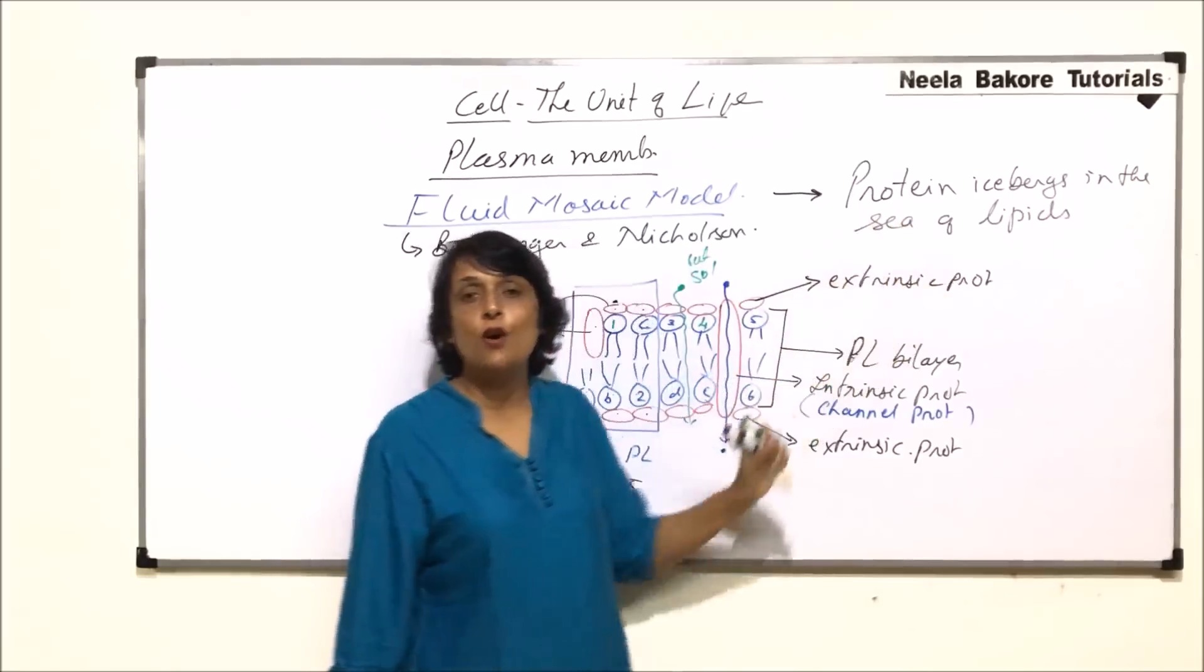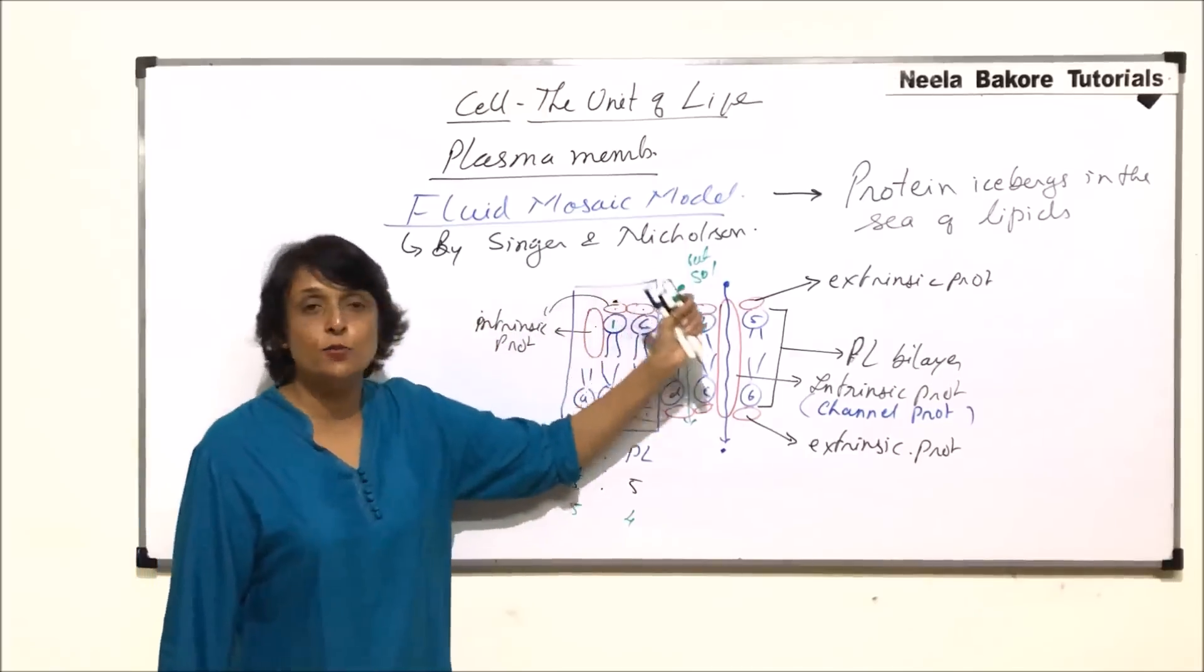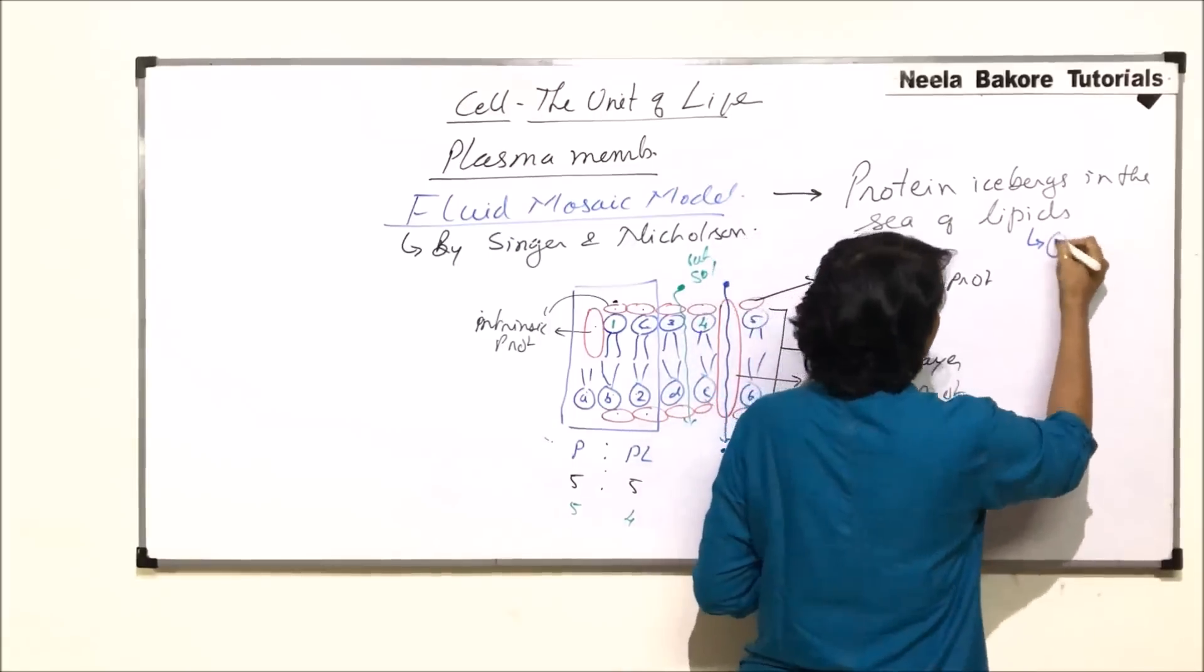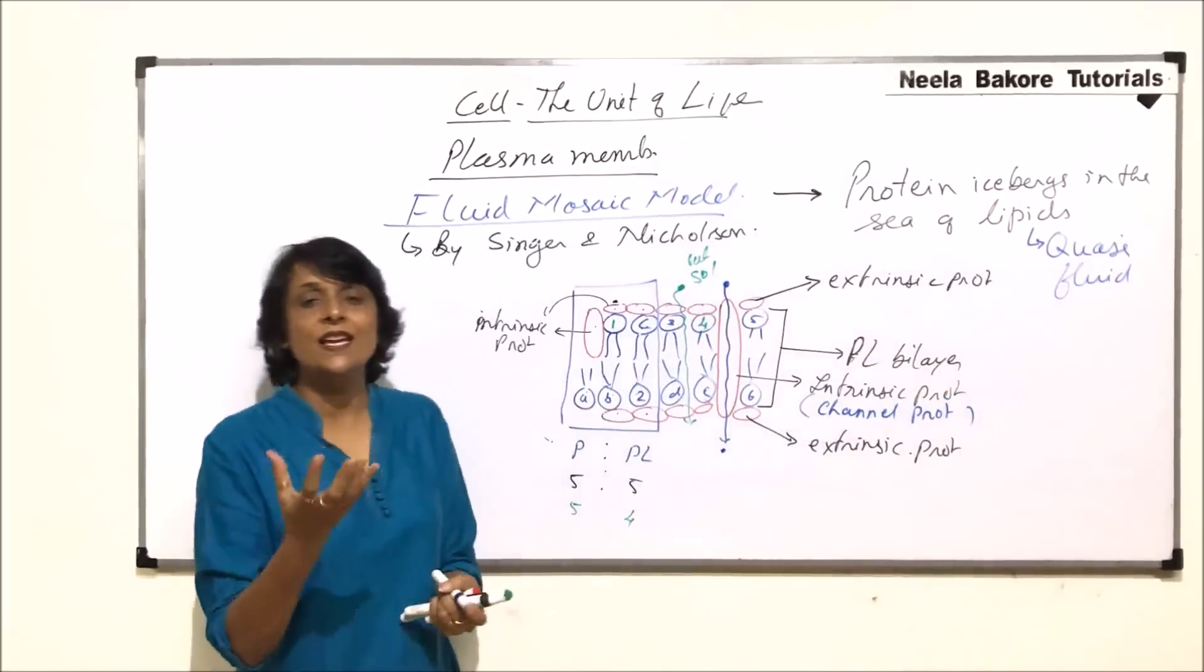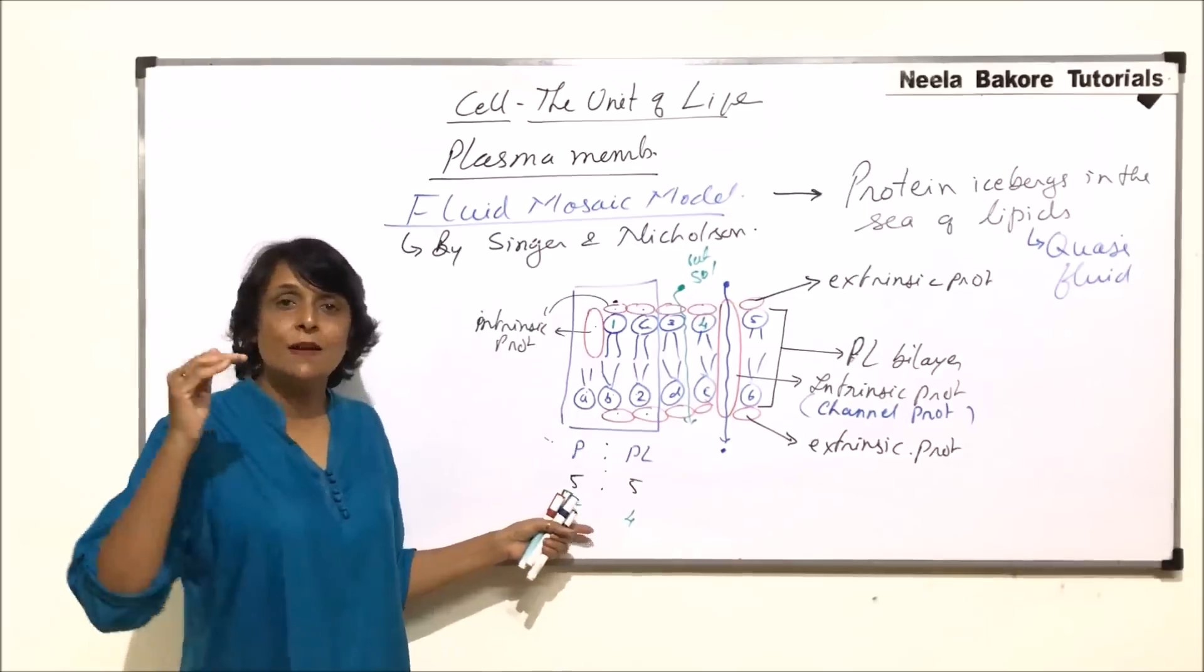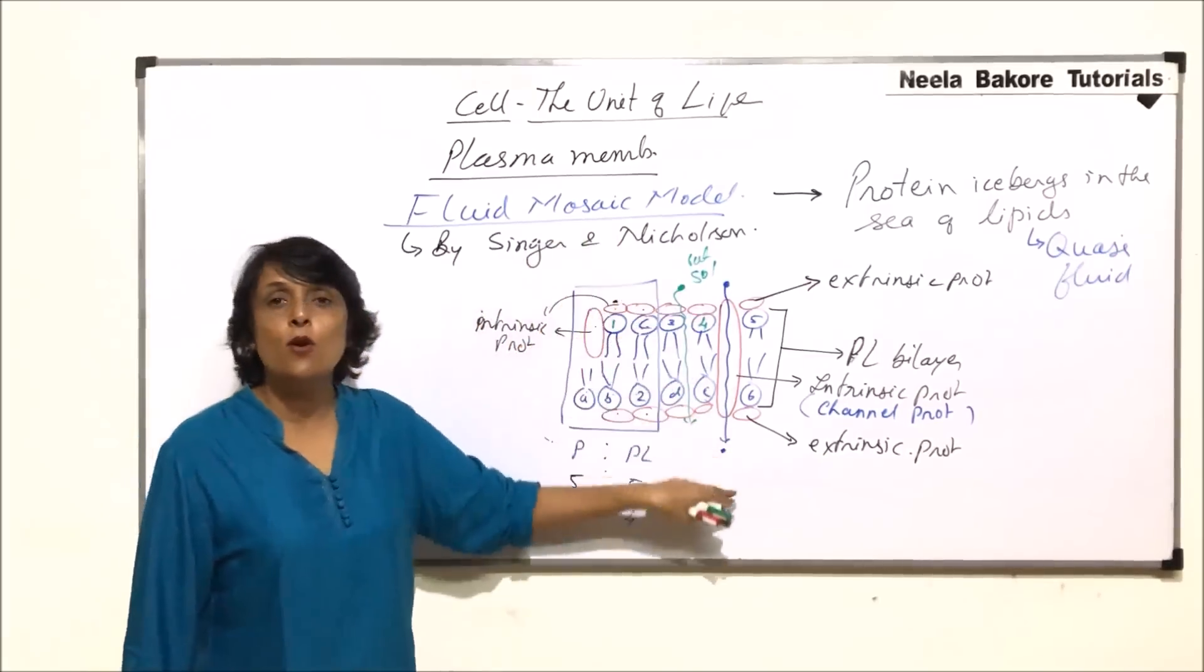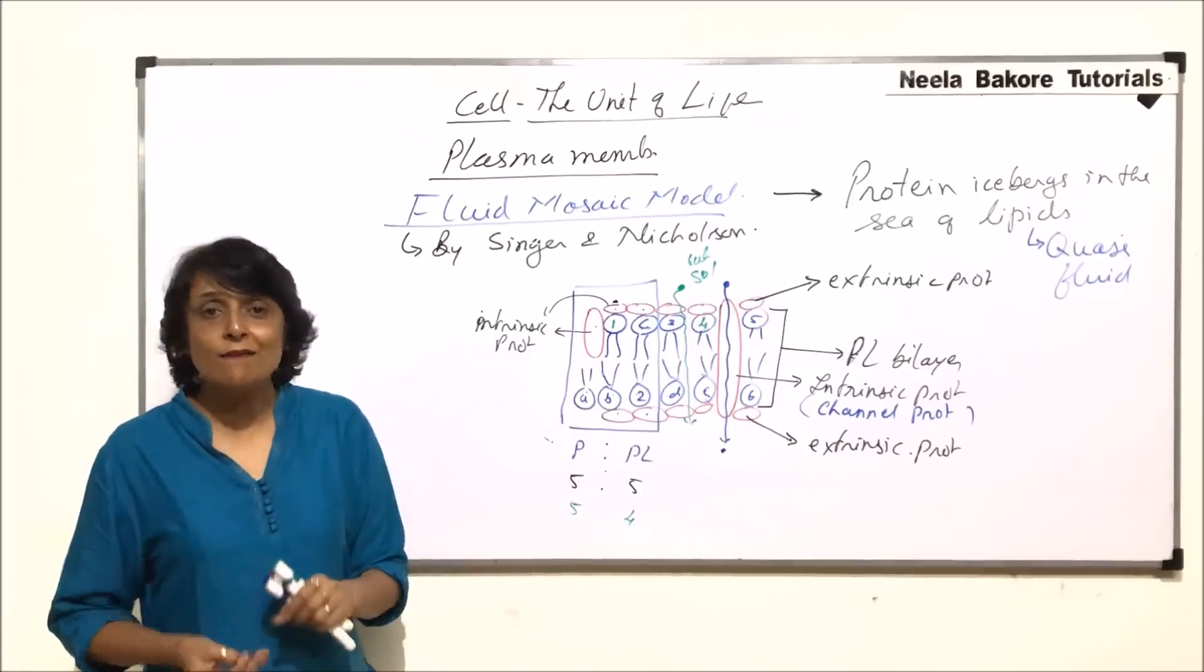So protein icebergs in the sea of lipids, they are comparing proteins, especially the extrinsic proteins, to icebergs and this lipid layer as a fluidic layer. And to explain the nature of lipid, they said the lipid or plasma membrane is quasifluid. Quasifluid is exactly jelly-like consistency, where it is neither solid nor liquid, but it is fluidic so that something can move on it. And this membrane explains all three properties of plasma membrane.